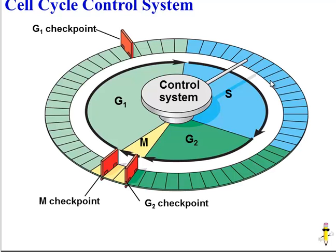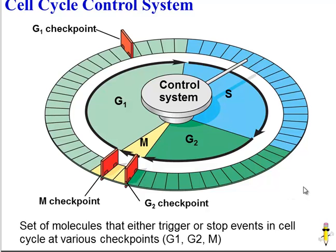Now let's explore in a little bit more detail how growth factors control cell division. In order to understand this, we have to look at the overall cell cycle control system. The control system is really just a set of molecules that will either trigger or stop events at various checkpoints as the cell proceeds through the cell cycle.